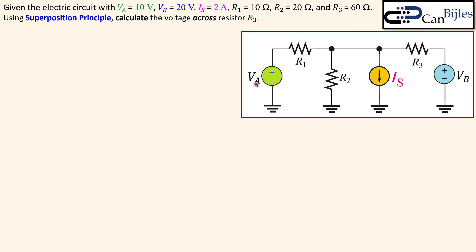We have Va = 10 volts, Vb = 20 volts, and a current source of 2 amps. R1, R2, and R3 are 10 ohms, 20 ohms, and 60 ohms respectively. We want to calculate, using the superposition principle, the voltage across R3. The R3 voltage is shown with plus on the left and minus on the right, and this is the V3 we would like to calculate.